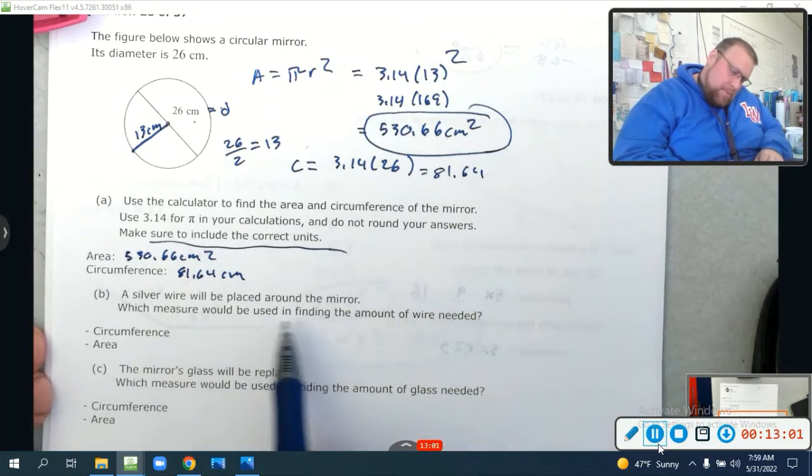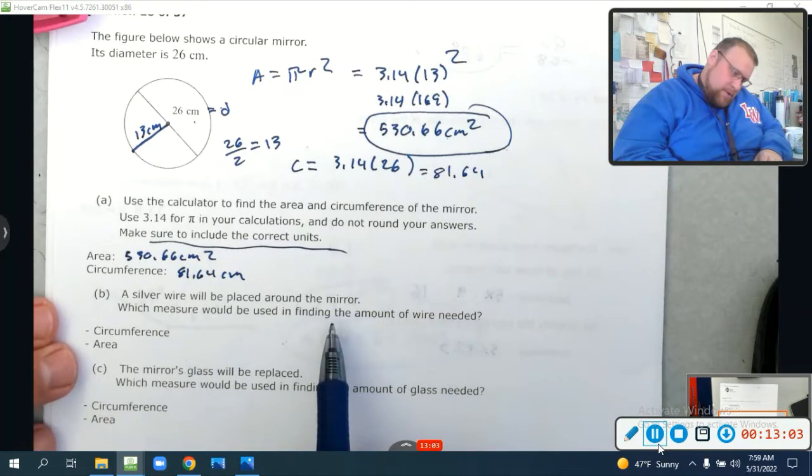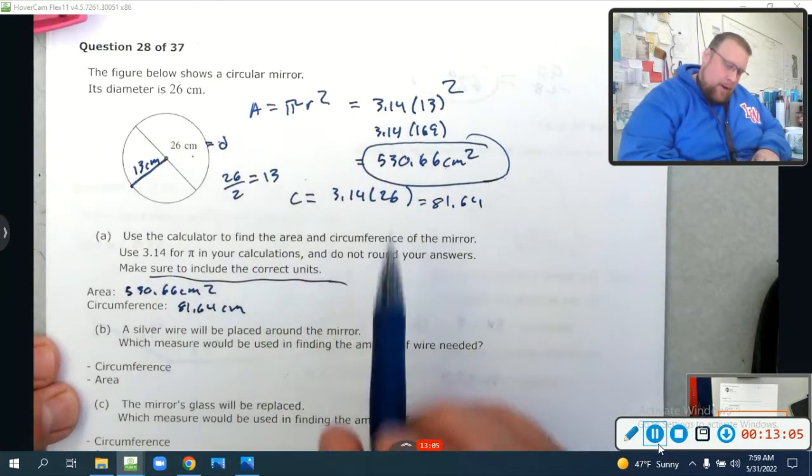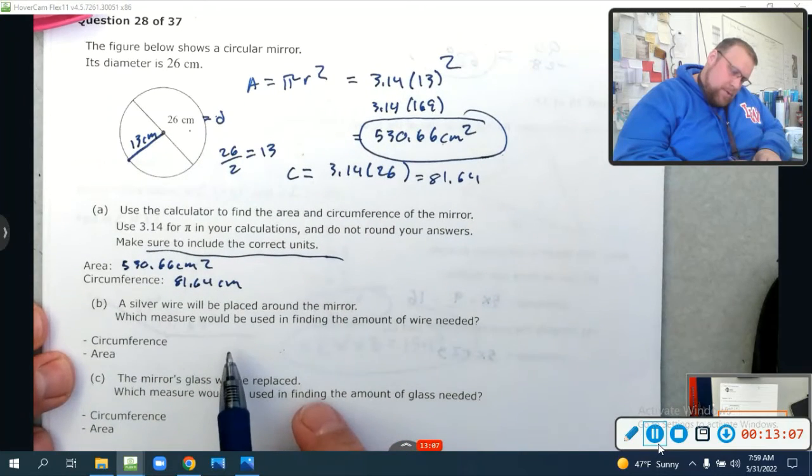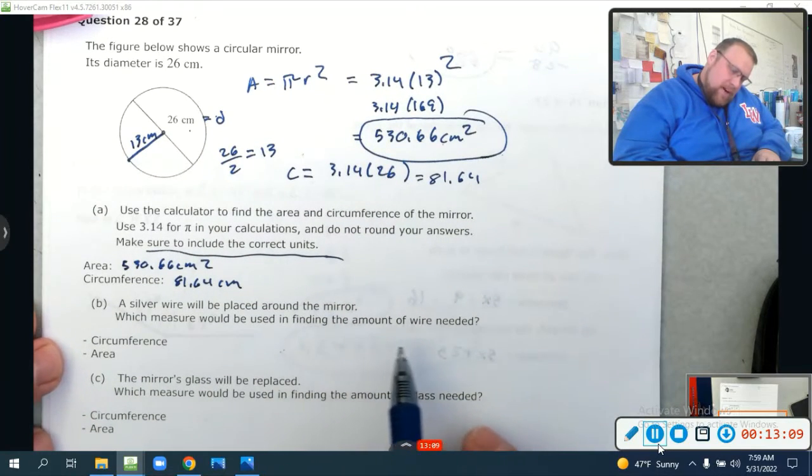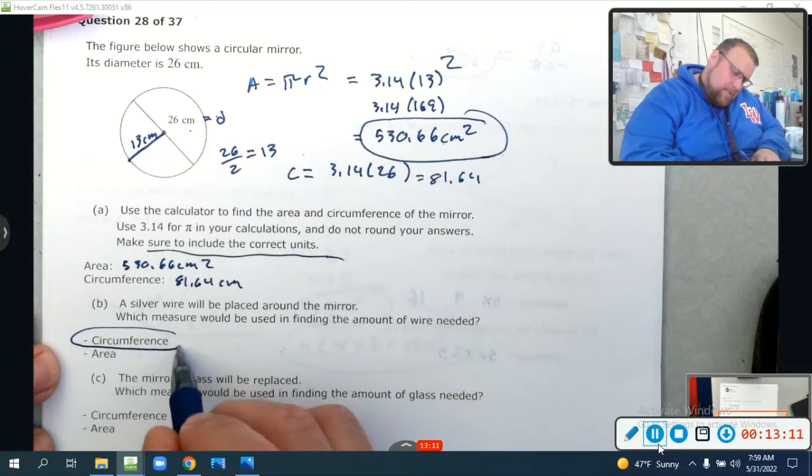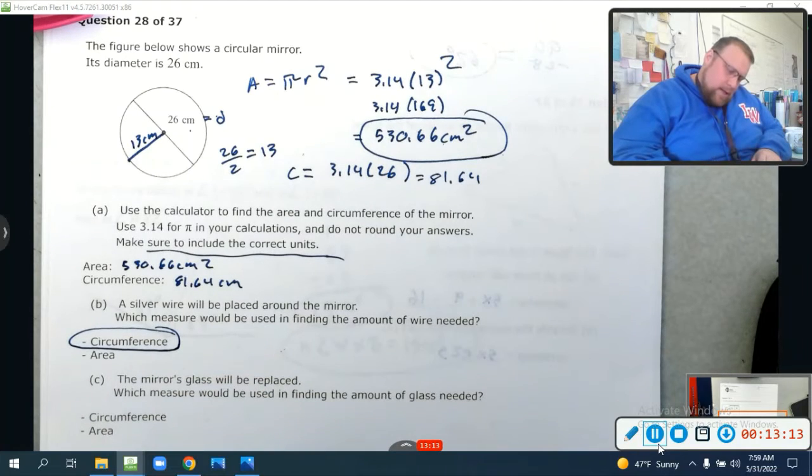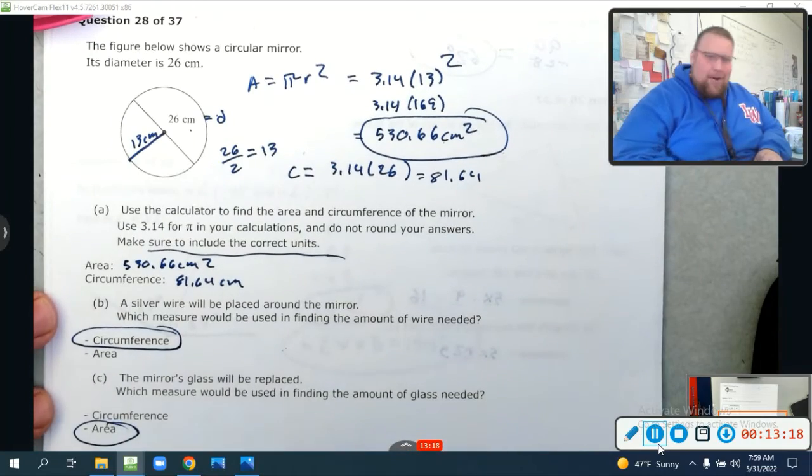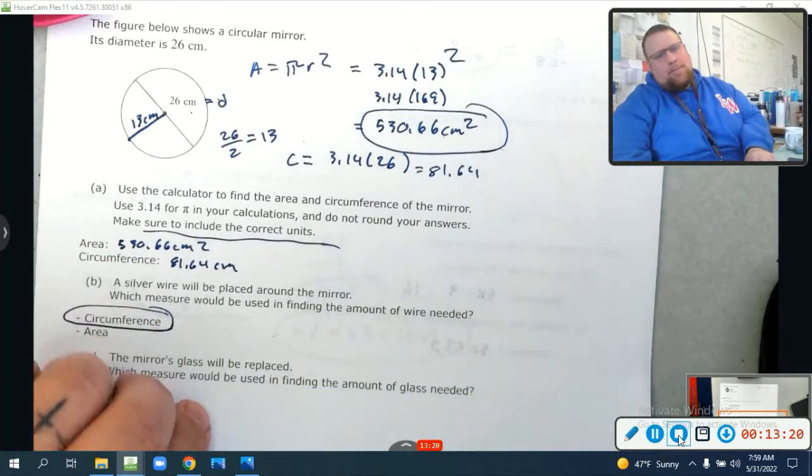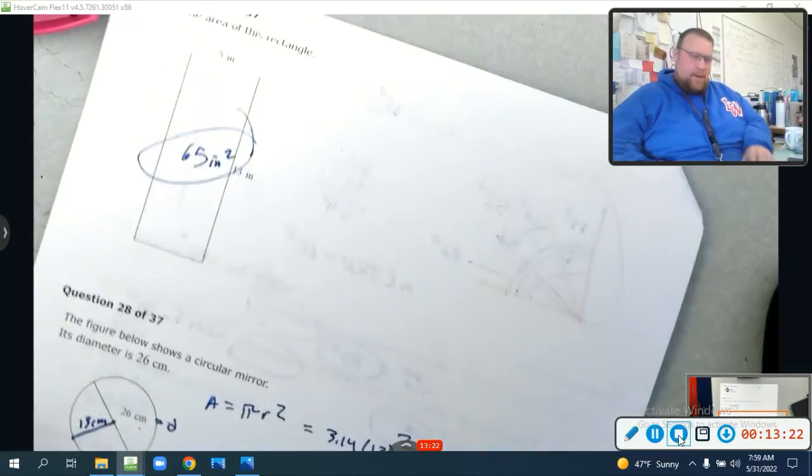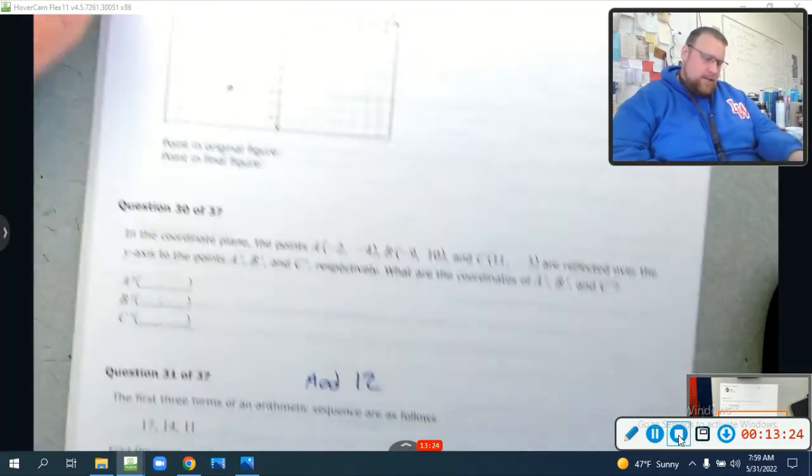A silver wire will be placed around the mirror. Which measure would be used in finding the amount of wire needed? The circumference, you're putting a wire around it. The mirror's glass will be replaced. Which measure will be used to find the amount of glass needed? The area. Boom. Look at that. We're busting through, y'all. This is definitely the longer of the sections, though. Our last couple right here.